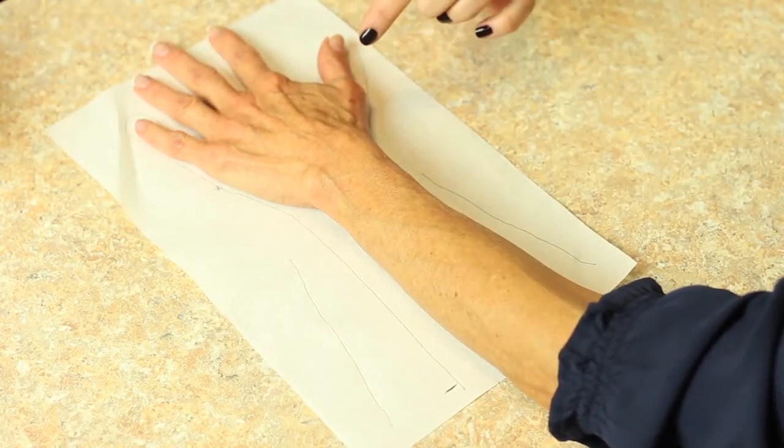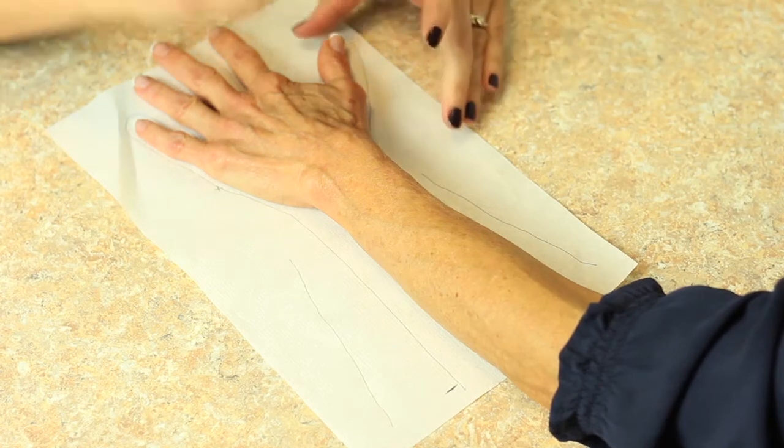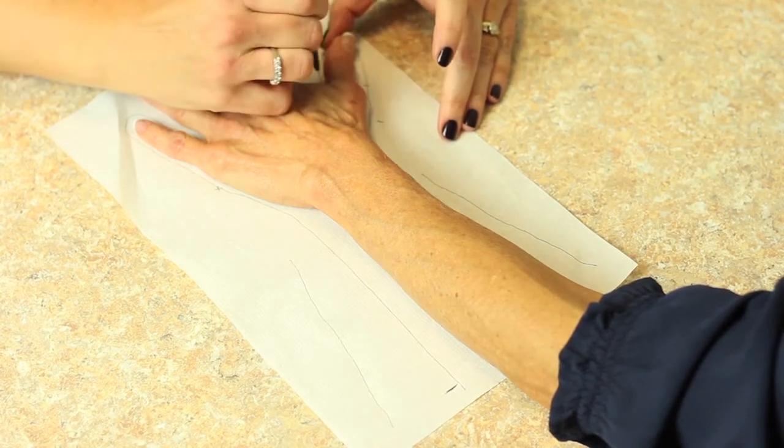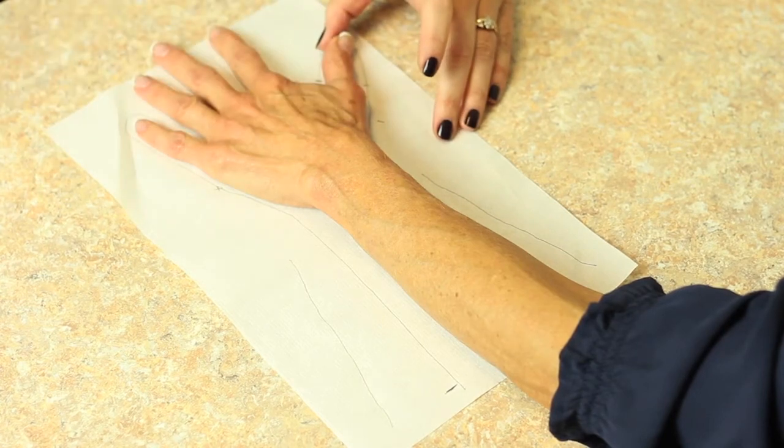To obtain where you're going to put the distal hole for the thumb what I'm going to do is mark for the MP joint of the thumb and the IP joint of the thumb.